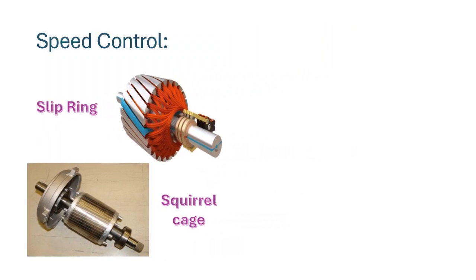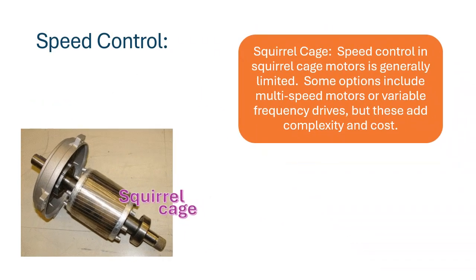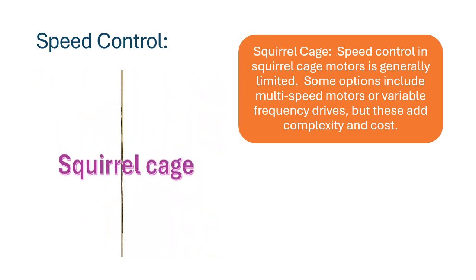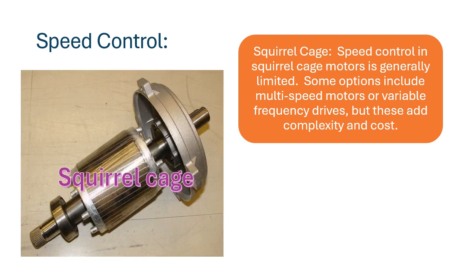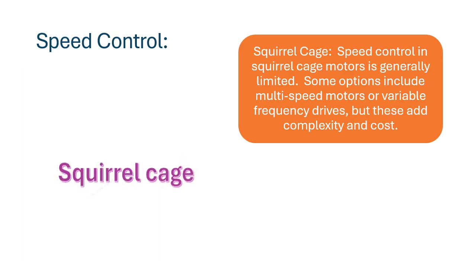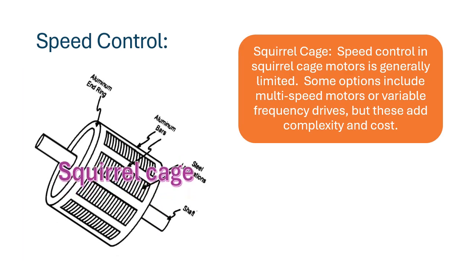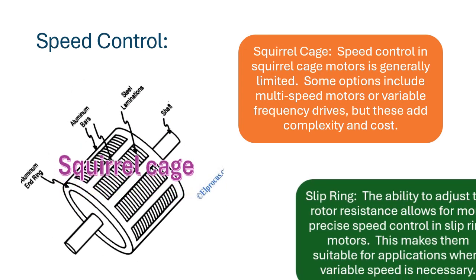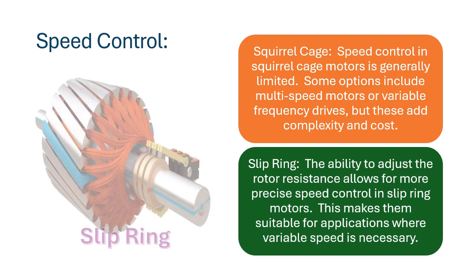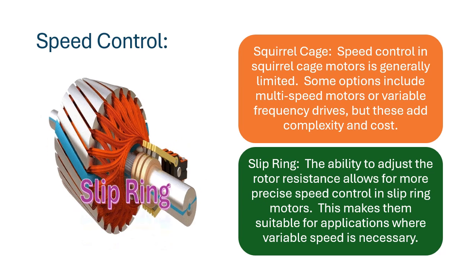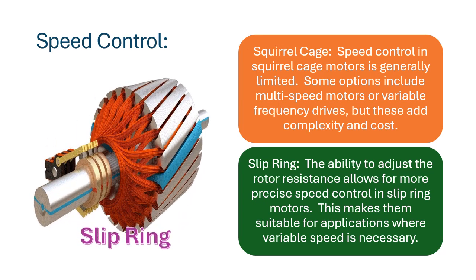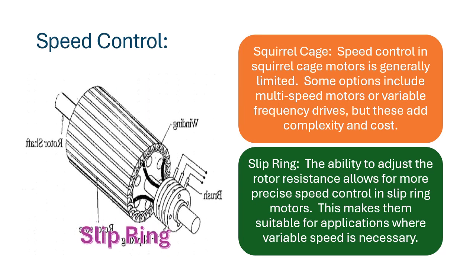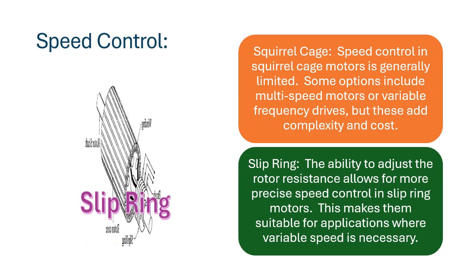Speed Control — Squirrel Cage: speed control in squirrel cage motors is generally limited. Some options include multi-speed motors or variable frequency drives, but these add complexity and cost. Slip Ring: the ability to adjust the rotor resistance allows for more precise speed control in slip ring motors, making them suitable for applications where variable speed is necessary.